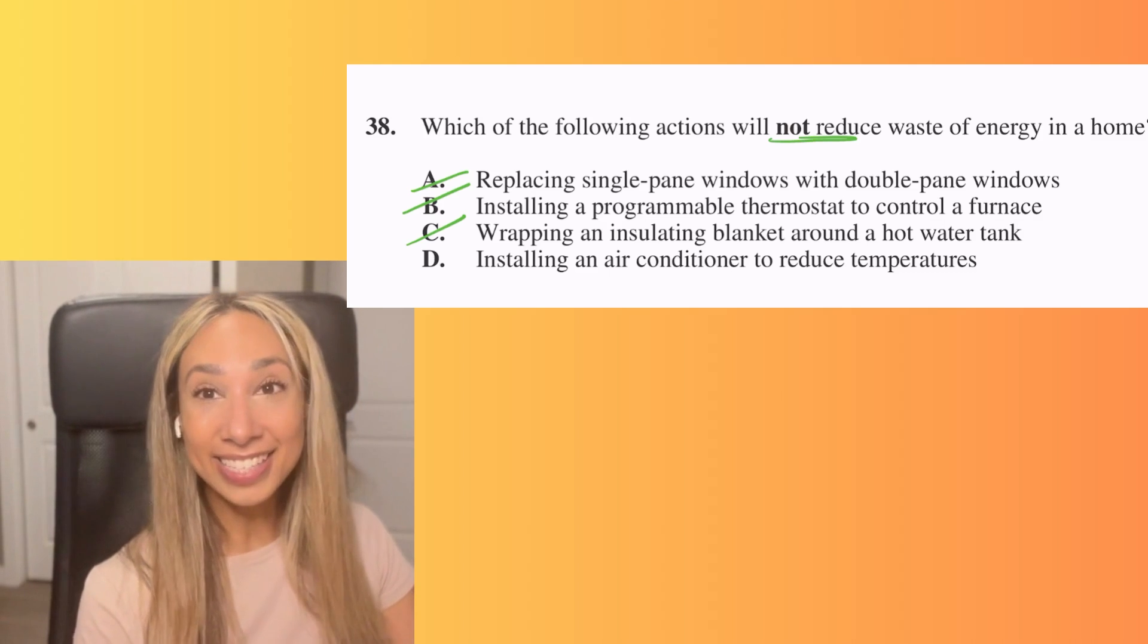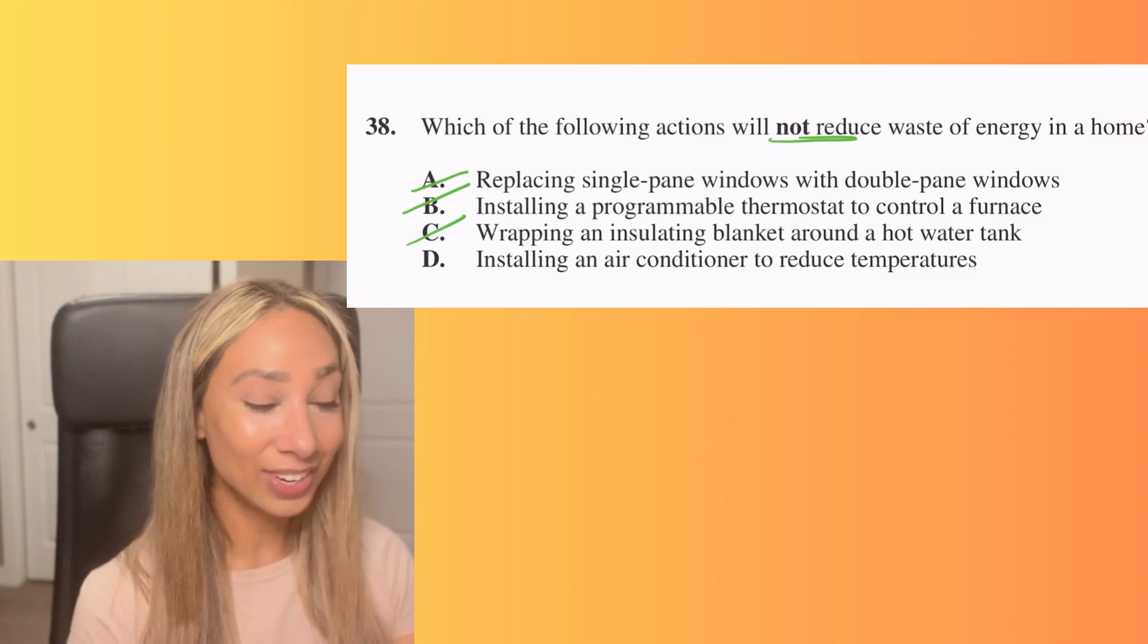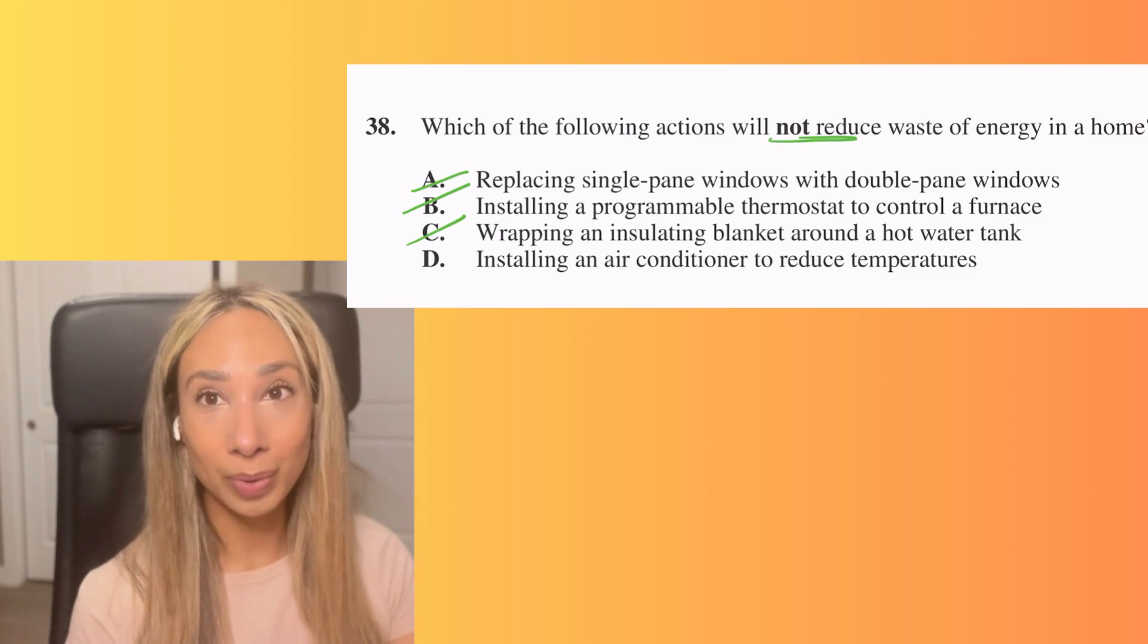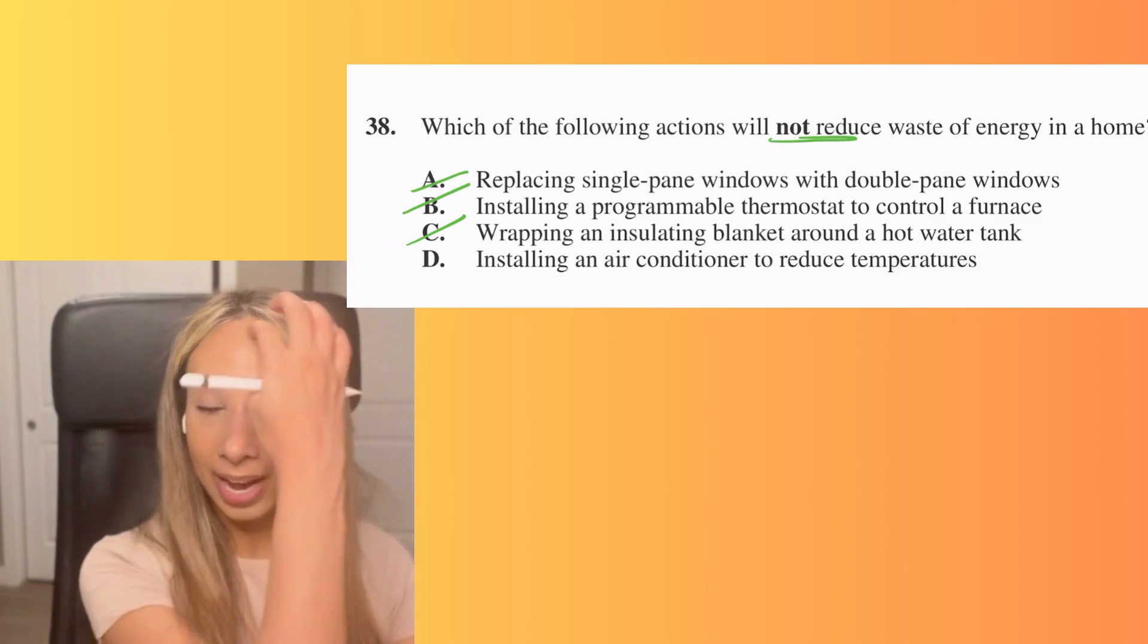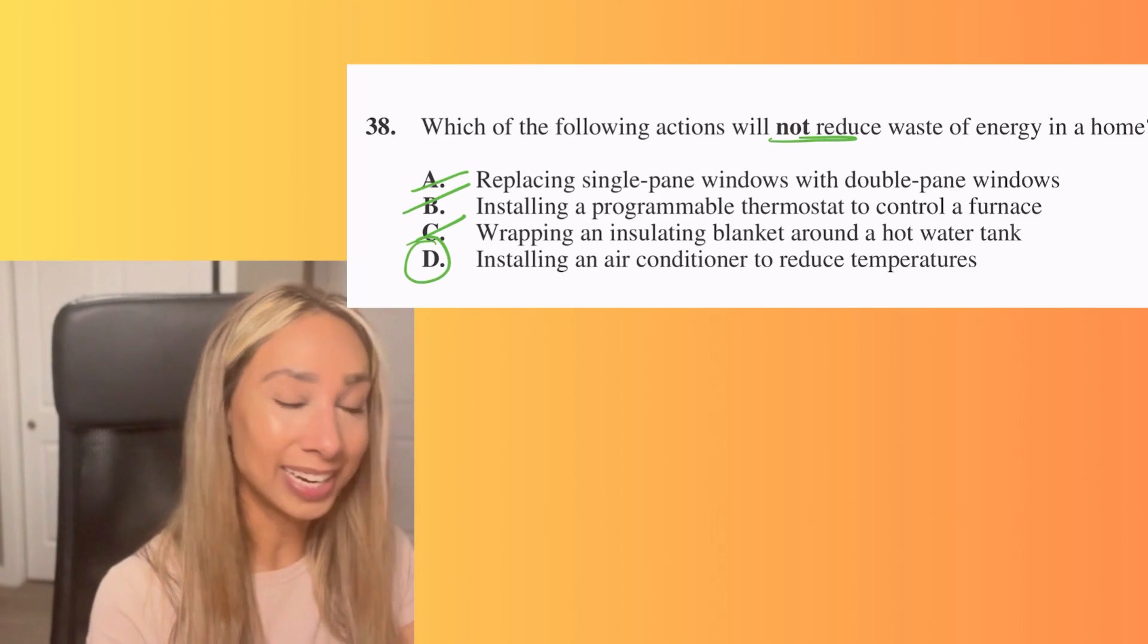The last option is installing an air conditioner to reduce temperatures. While that is very nice in our summers when it gets really, really hot, it is going to not reduce the amount of energy. You're going to be consuming more energy. Anyone who has an air conditioner at home knows that when that's running, the bill is going to be a little bit higher. So that's going to be our correct answer.